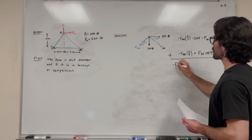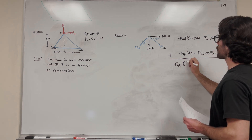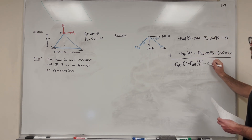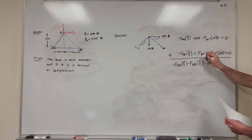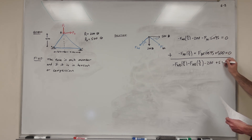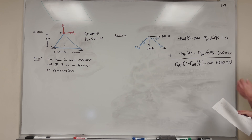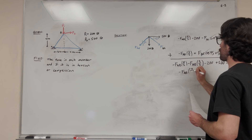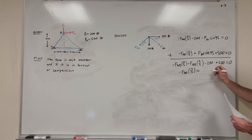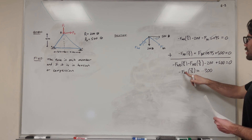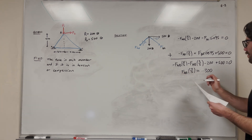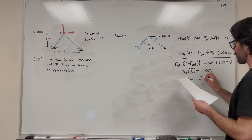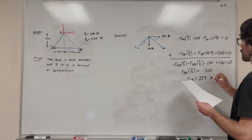Adding the two equations, the BC terms cancel and we get: negative force AB times 4/5, minus force AB times 3/5, minus 200, plus 500 equals zero. Combining gives negative force AB times 7/5 equals negative 300. The negatives cancel, so force AB equals 300 times 5/7, which is 214 pounds.